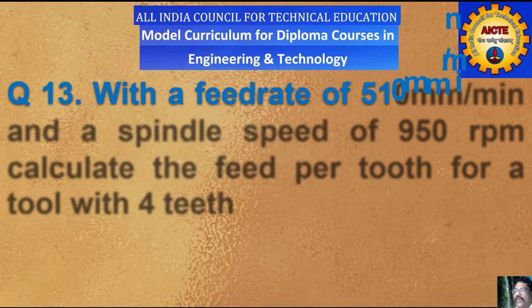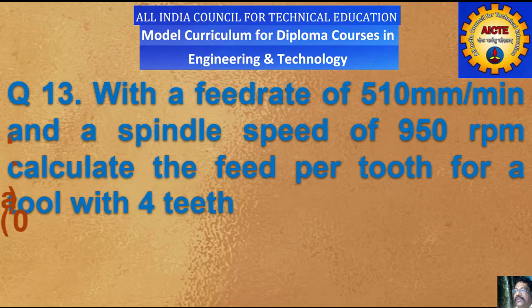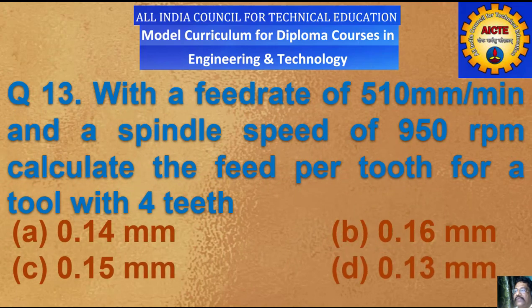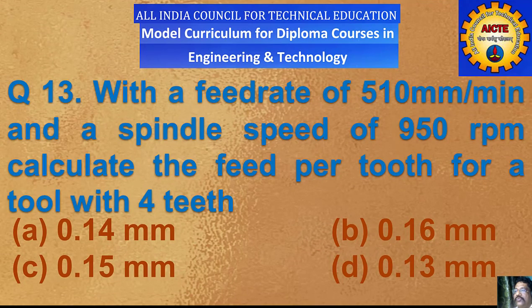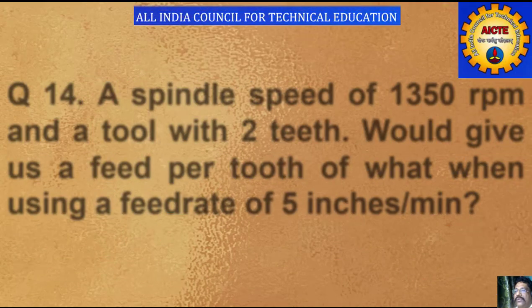Question number 13: with a feed rate of 510 mm per minute and a spindle speed of 950 rpm, calculate the feed per tooth for a tool with 4 teeth. A) 0.14 mm, B) 0.16 mm, C) 0.15 mm, D) 0.13 mm.